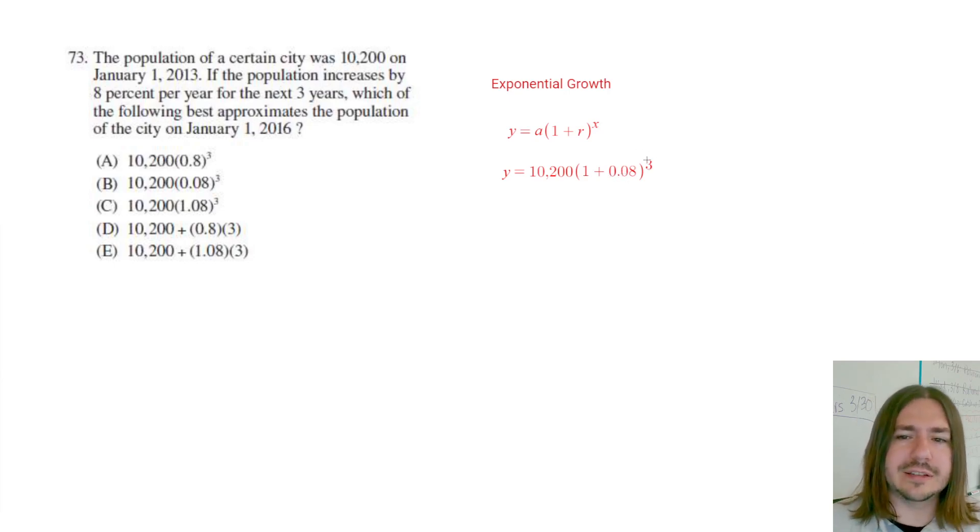And then it says that we're trying to measure or find the population in 2016. That's three years after 2013. It even states explicitly what number to use for the time, three years here. So the only thing left to do here is to simplify what's inside the parentheses. 1 plus 0.08 is going to be 1.08. And there you go. We've got our equation.